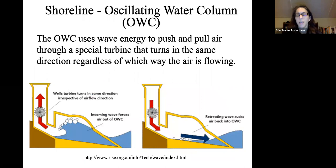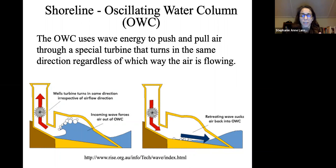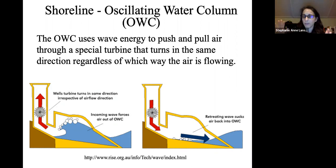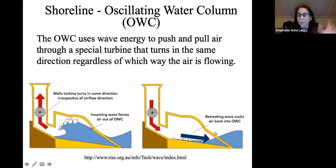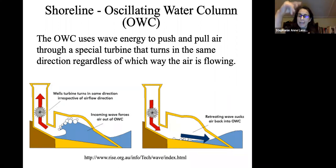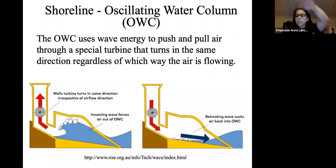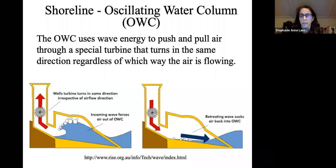An oscillating water column (OWC) uses air rather than water to move the turbine. The wave comes into this reservoir and pushes the air out. As the wave recedes, a vacuum is created and air is drawn back in. A Wells turbine is used because it turns in the same direction whether air is flowing in or out, so the retreating air actually sucks the wave back into the oscillating water column.